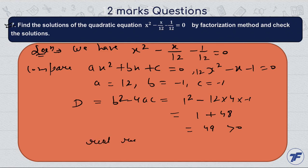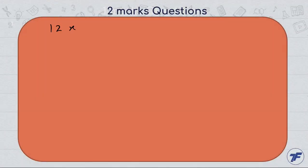Now find the roots. How do we find them? 12x² - x - 1 = 0. By factorization method, apply splitting the middle term.